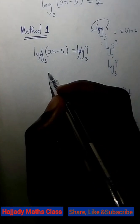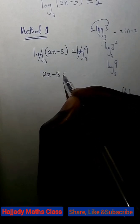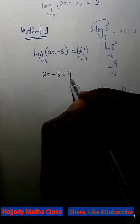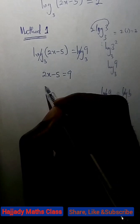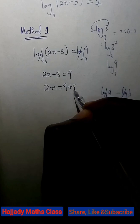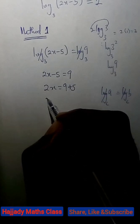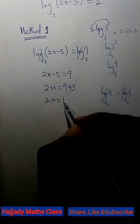And here, we have 2x minus 5 equals 9. Solving this further, we have 2x equals 9 plus 5, and 9 plus 5 is equivalent to 14.